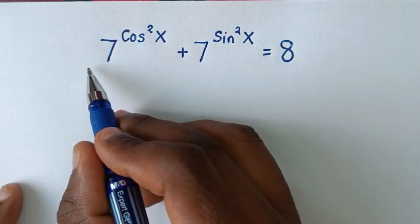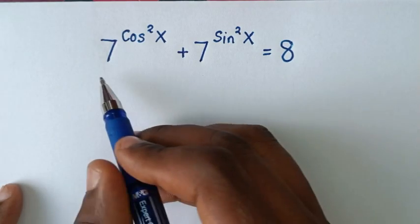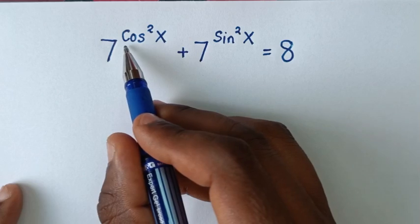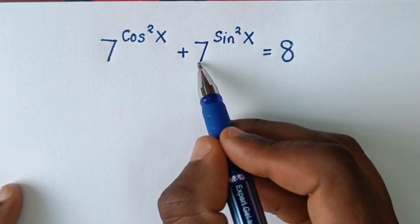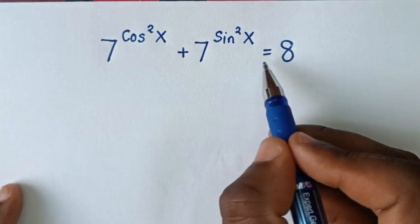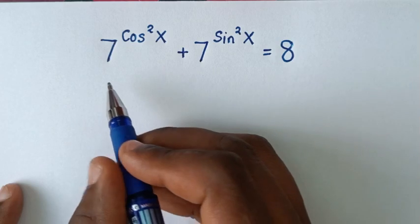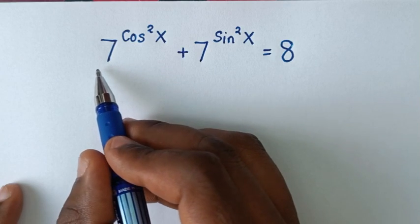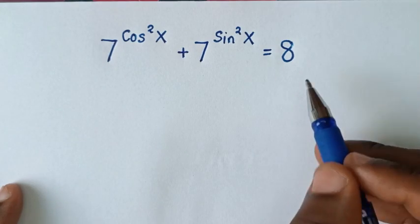You are welcome to solve this math problem which is 7 to the power of cos²x plus 7 to the power of sin²x is equal to 8. We need to find the values of x from this equation.